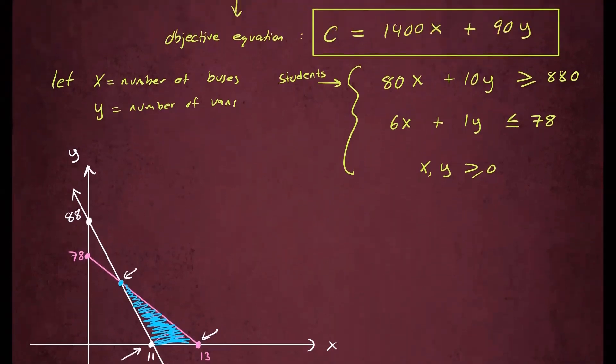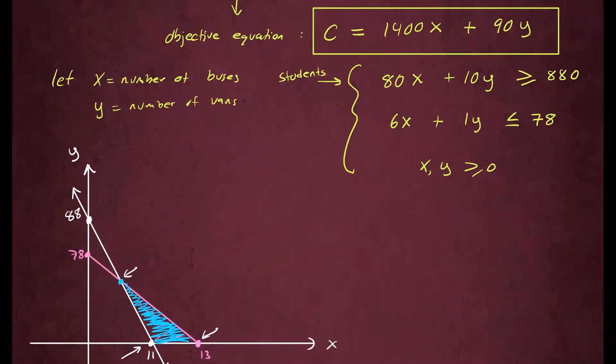So we already know two of the corner points, (13, 0) and (11, 0). We just need to find this one right here. So that's when the two curves intersect. So we're going to solve this system.